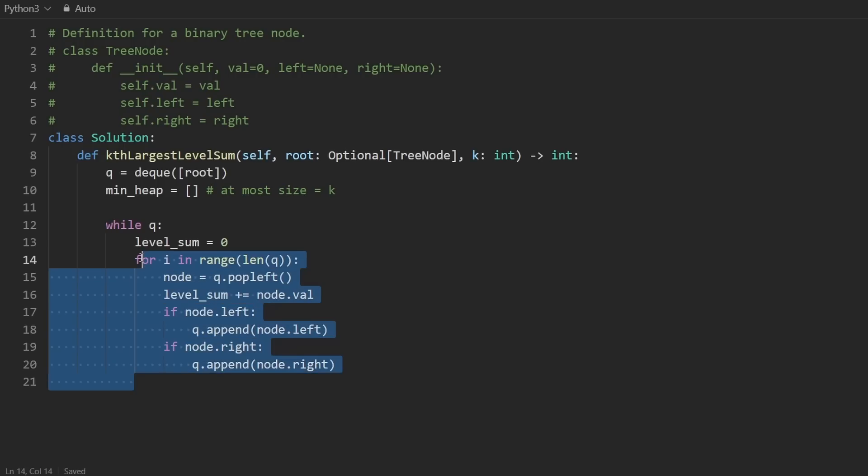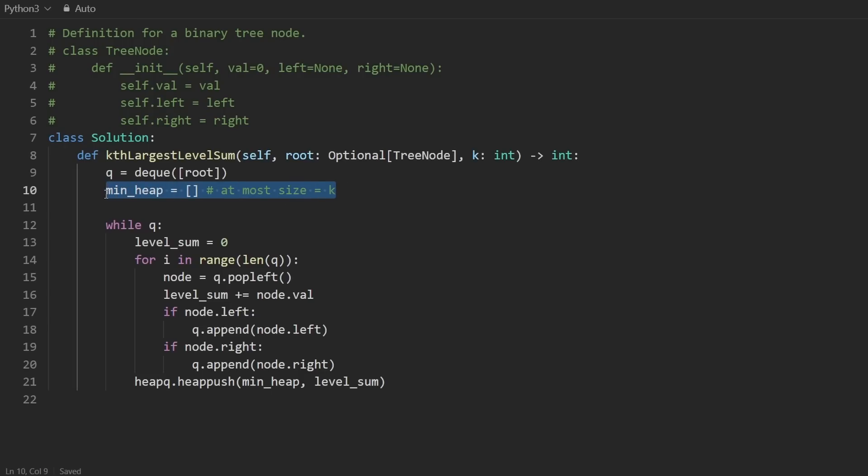Now that we computed the level sum, let's go ahead and push it to the min heap. heapq.heappush to the min heap, this value, the level sum. It's possible that the size of the heap became greater than k at this point, or maybe it's possible that it didn't. Either way, let's go ahead and check if the length of the min heap is greater than k. Well, in that case, let's pop from it. heapq.heappop from the min heap.